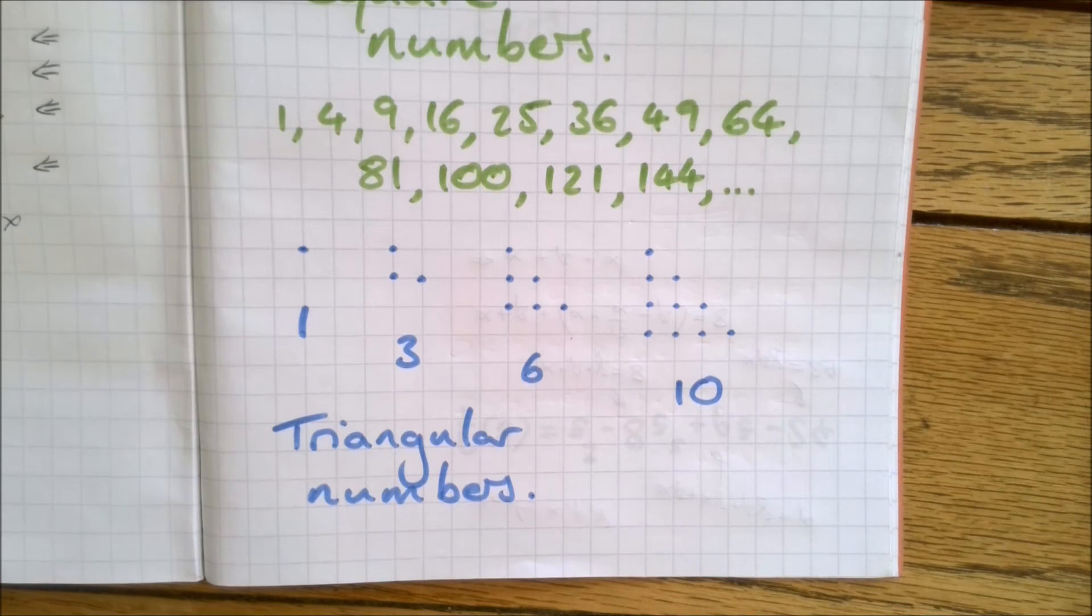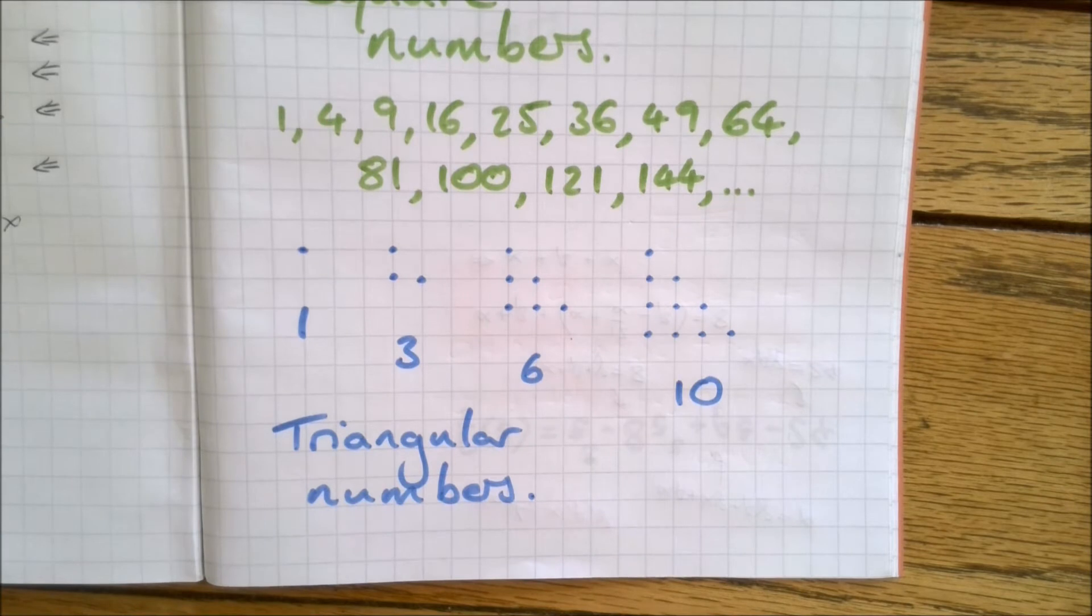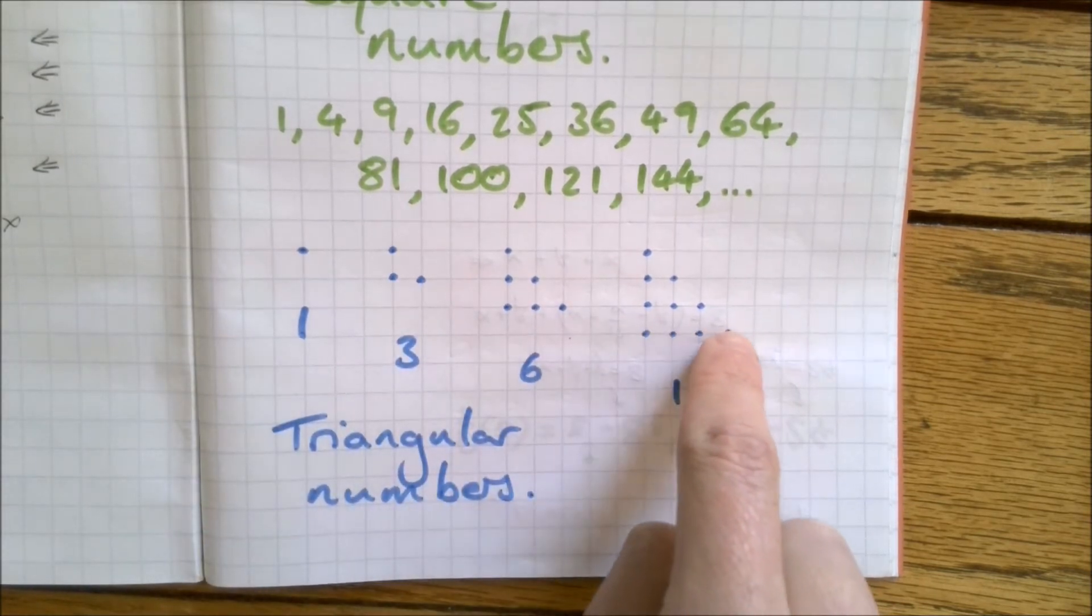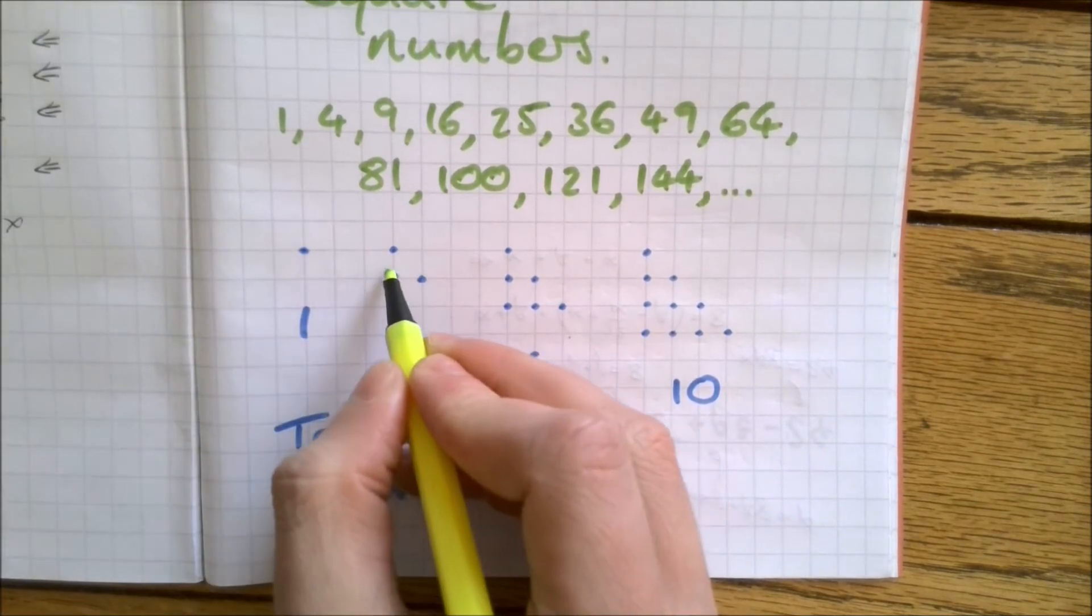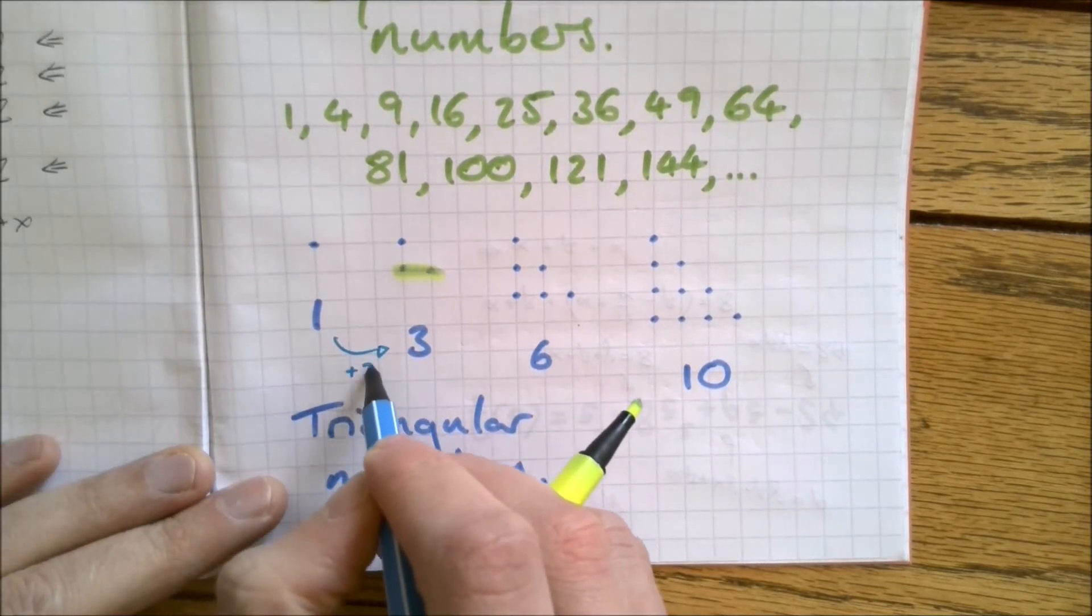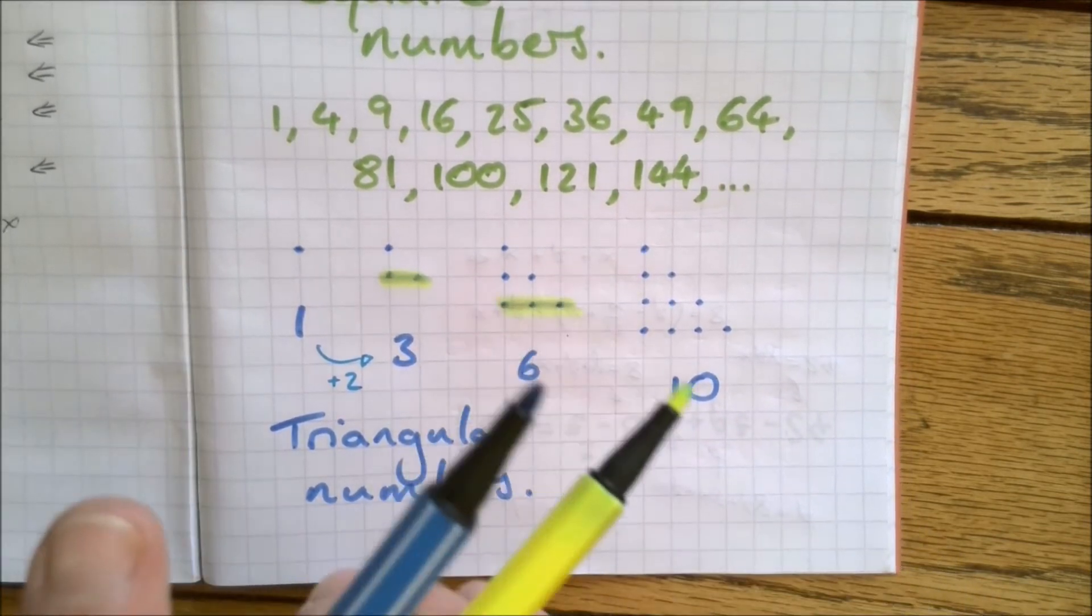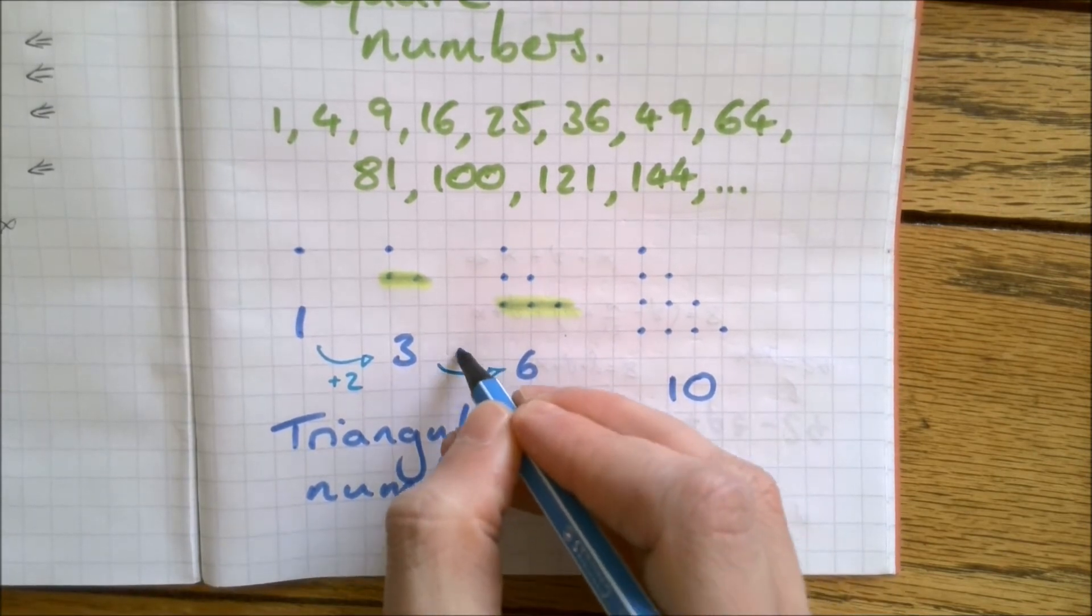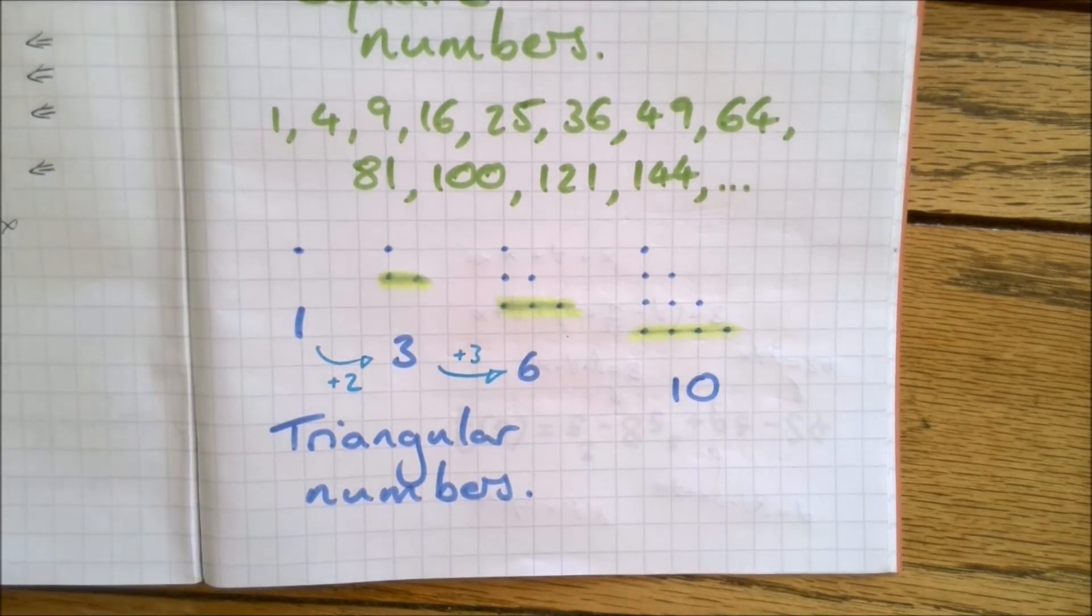Hopefully you've had a good chance to draw out loads of those with the numbers underneath. You may have noticed a nice pattern just in the numbers. When we are going up each time, it's like we're adding on another row. So between the first two, we're adding on two. Between the 3 and 6, we're adding on three. Between the 6 and the 10, we're adding on four.